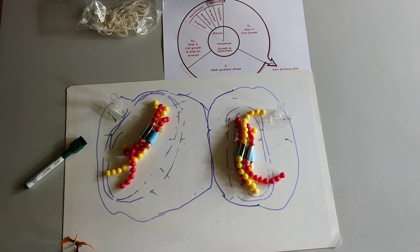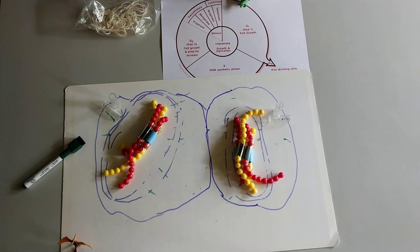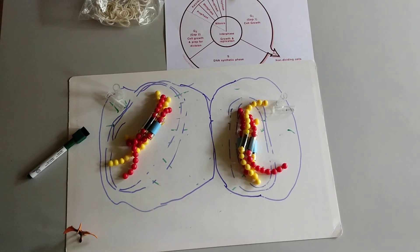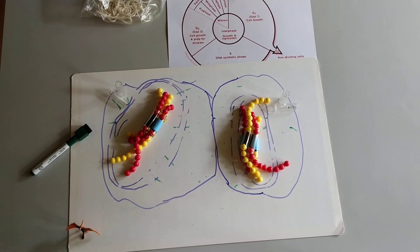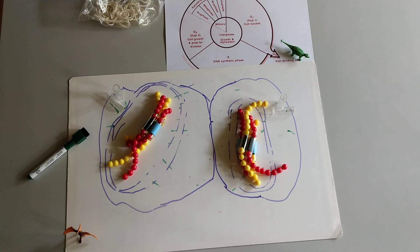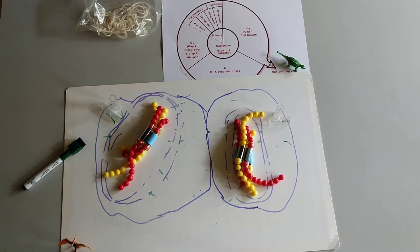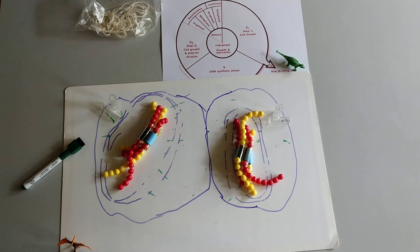And these two separate cells are now back at G1 of interphase. So they could grow and duplicate again themselves. Or if they're done dividing, they might go off into G0. Which is kind of this resting stage where cells that don't ever plan to divide again end up. But they're not really resting. They're still doing all their normal cell things. So that is mitosis.